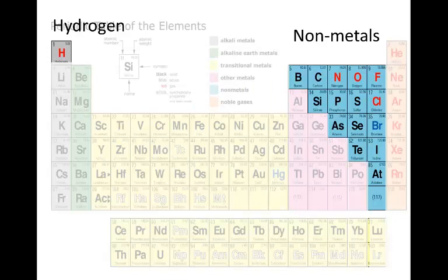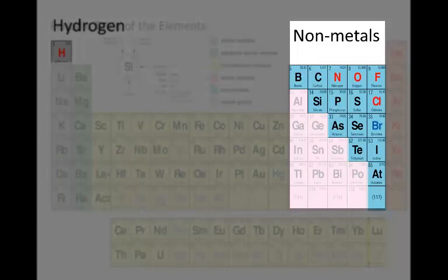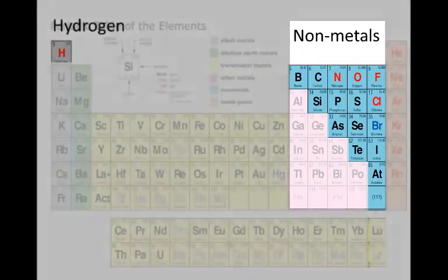Notice that in this periodic table, the non-metals are shown with a blue shade. Let's take some examples of some acids.